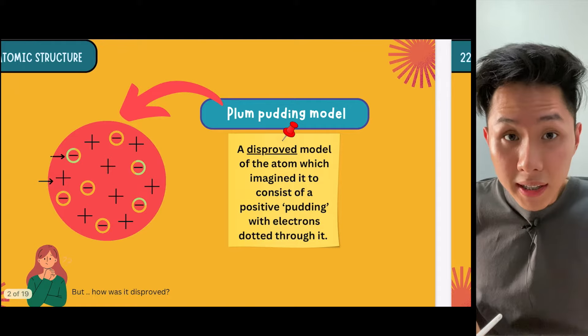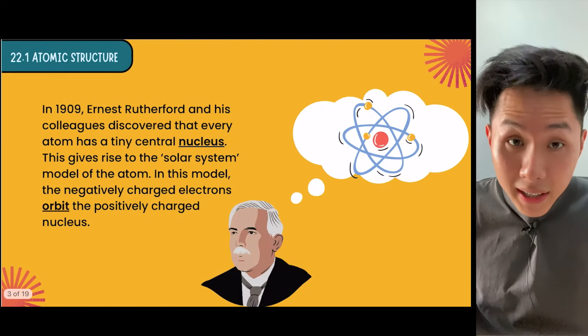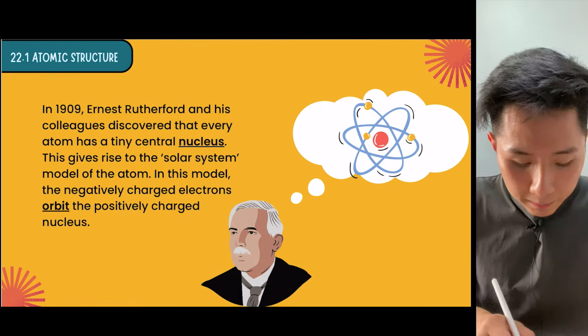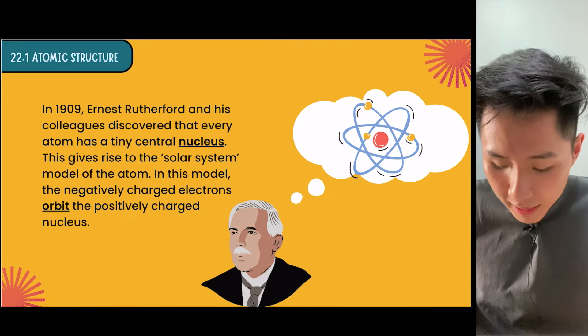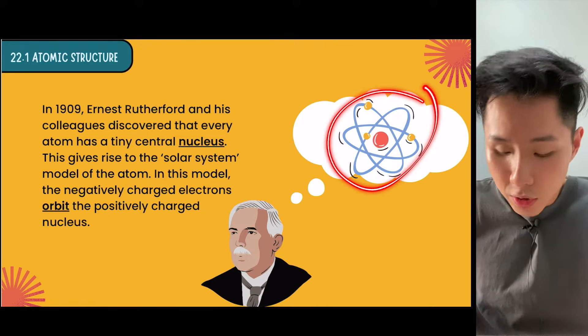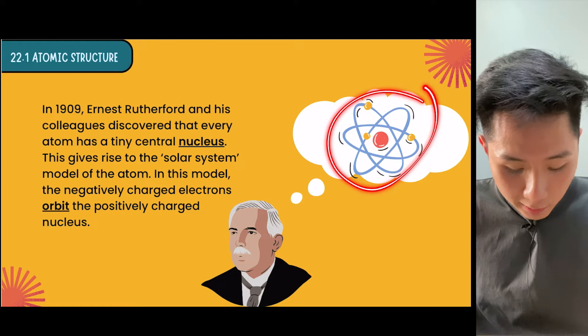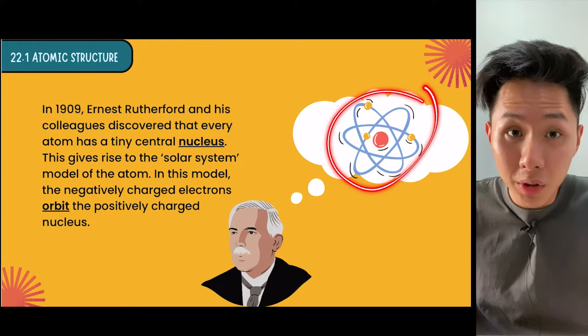How it was disproved is from this experiment carried out by Ernest Rutherford. They figured out that the atom should look different - this is also known as the solar system model of the atom.